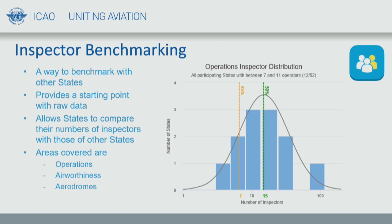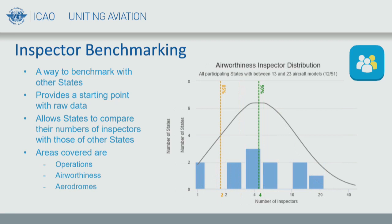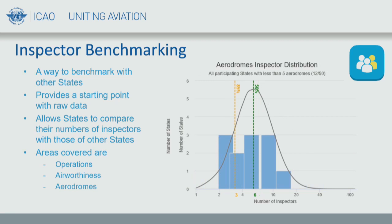Using an example state, for the area of operations the state falls in the range of states with between seven and eleven operators. The graph shows that 85% of states have at least seven inspectors and on average states have fifteen, so this state is expected to have around fifteen inspectors with a minimum of seven. For airworthiness, overseeing nine to twelve aircraft models, the expected number is around five inspectors, no less than three. For aerodromes, overseeing fewer than five aerodromes, the expectation is around six inspectors, no less than three.